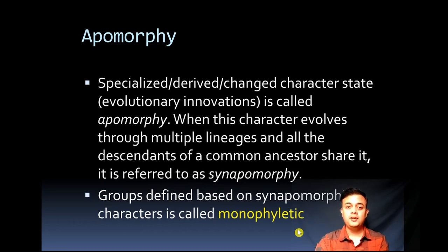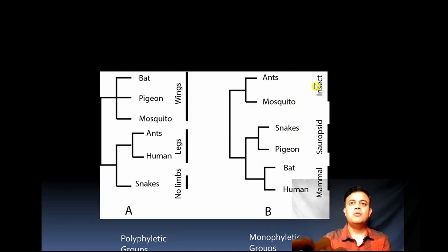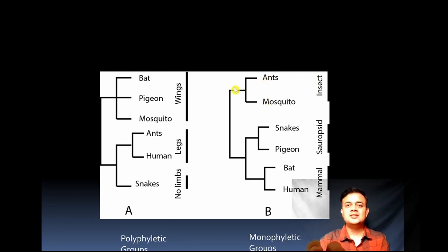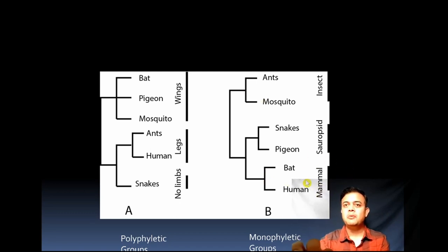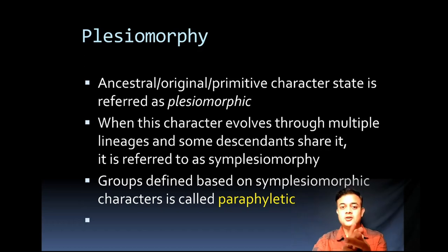Monophyletic groups are groups defined based upon synapomorphic character states. For example, Insecta is a monophyletic group because the synapomorphic character state defining this group is six appendages. Similarly, Mammalia is a monophyletic group — the synapomorphic character state is the presence of mammary glands. That character is used to define this group.